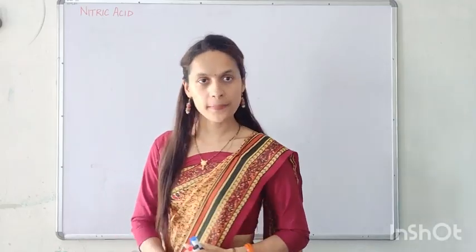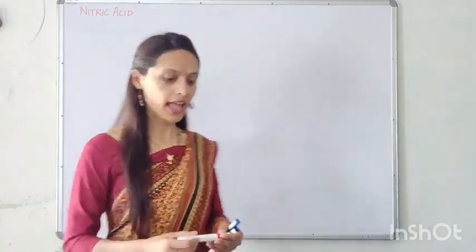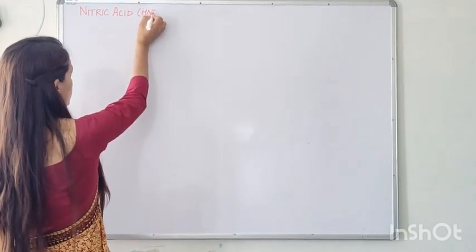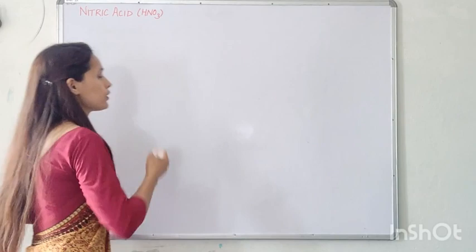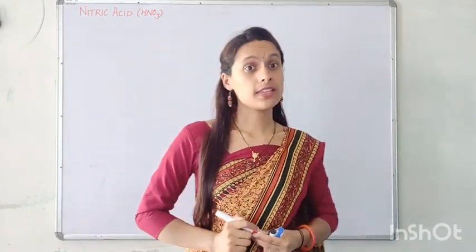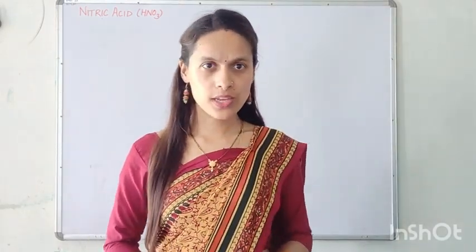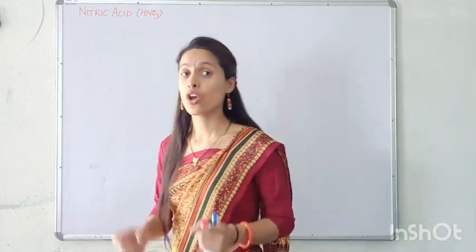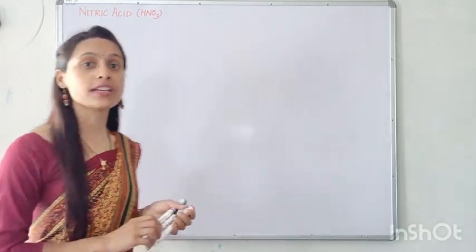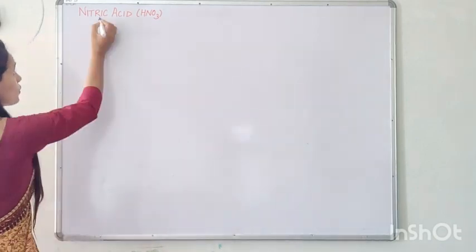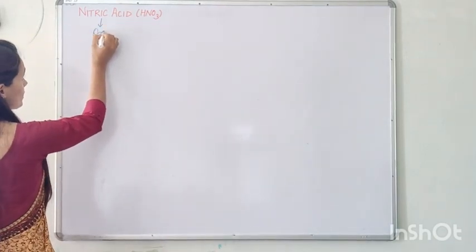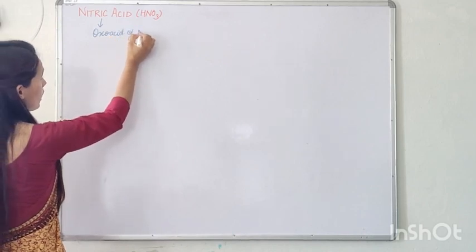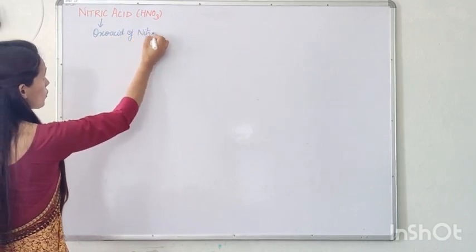Our topic is nitric acid and the formula of nitric acid is HNO3. This HNO3 is known as an oxoacid of nitrogen. What do you mean by oxoacid?